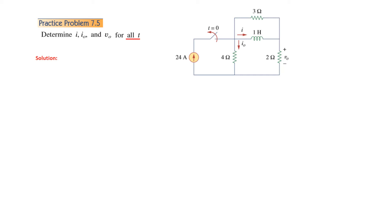In this circuit, the current through the inductor is always called I or I(T) — keep that in mind. Now let's look at this switch. The switch direction shows that it is going to open at T equals 0, or slightly after T equals 0. That means before T equals 0 the switch is closed. The question asks us to determine I, the current through the inductor (also called I_L), then I₀ (this current), and V₀ — the voltage across the 2-ohm resistance.